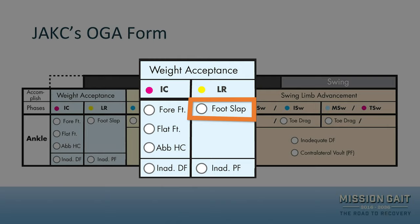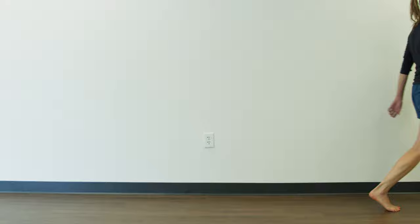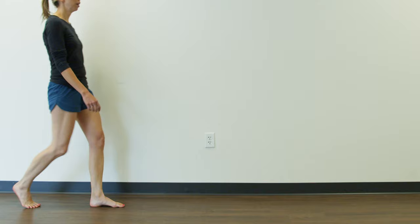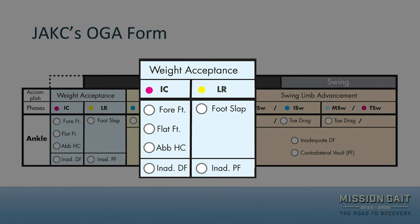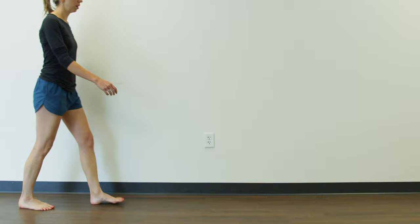Moving into loading response, foot slap is an extremely common finding — it's probably one of the most audible things in gait analysis, something you'll definitely be able to hear and see. Also in this same phase, you could potentially see inadequate dorsiflexion as well.